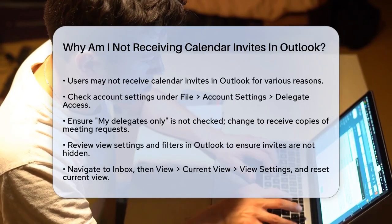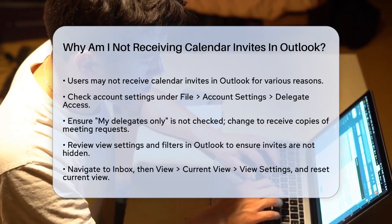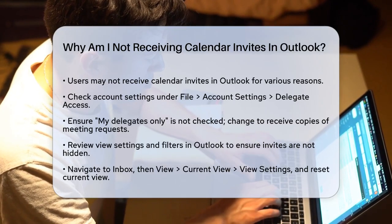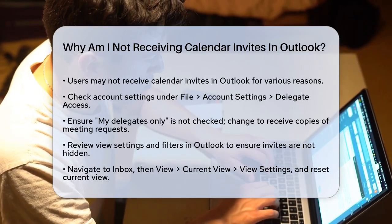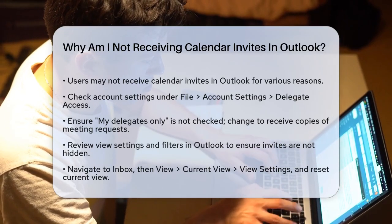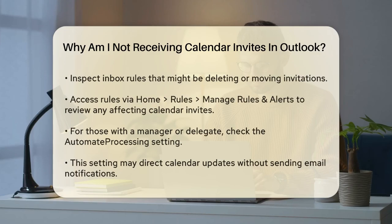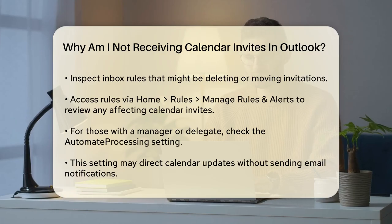Another thing to look at is your view settings and filters. It's possible that some settings are hiding the updated invitations. In Outlook, click on your Inbox, then go to View, Current View, View Settings. Click Reset Current View to see if this makes the invitations visible again.